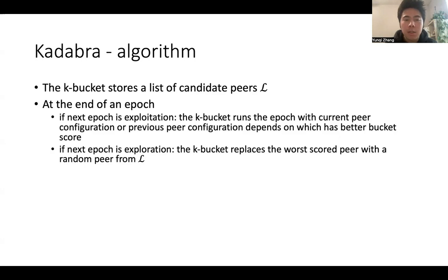If the next epoch is exploitation, the K-bucket runs the epoch with current peer configuration or previous peer configuration, depending on which has better bucket score. If next epoch is exploration, the K-bucket replaces the worst-scored peer with a random peer from the candidate list.